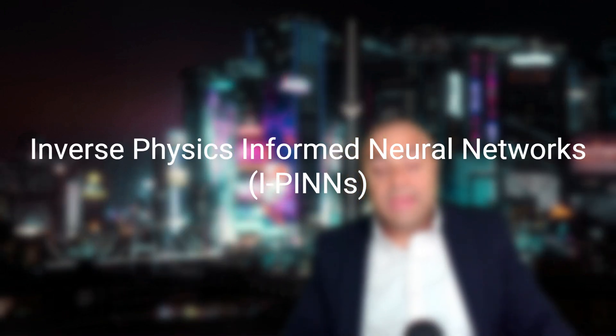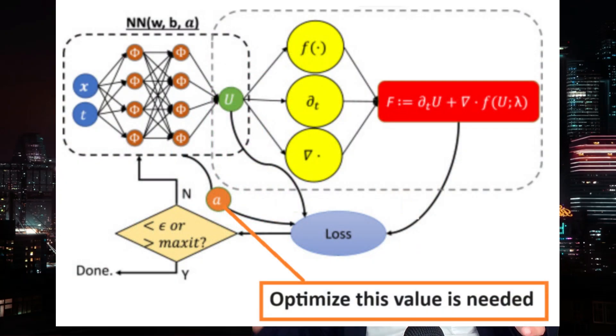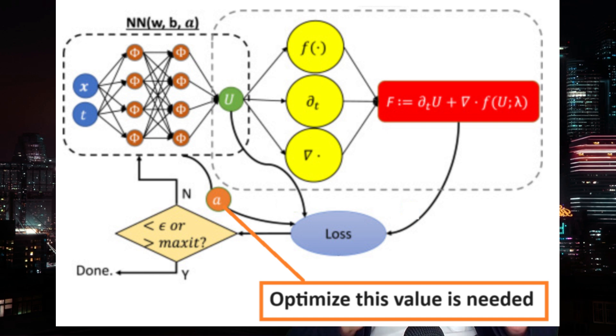The second type is I-PINN, or inverse physics-informed neural networks. This kind of network uses the same architecture: X and Y as input, and on the other side, the value of interest like velocity and pressure. But this time, we will solve an inverse problem — we try to calculate a property value. This time, we will use actual data, which can come from another simulation or from actual experimental data.